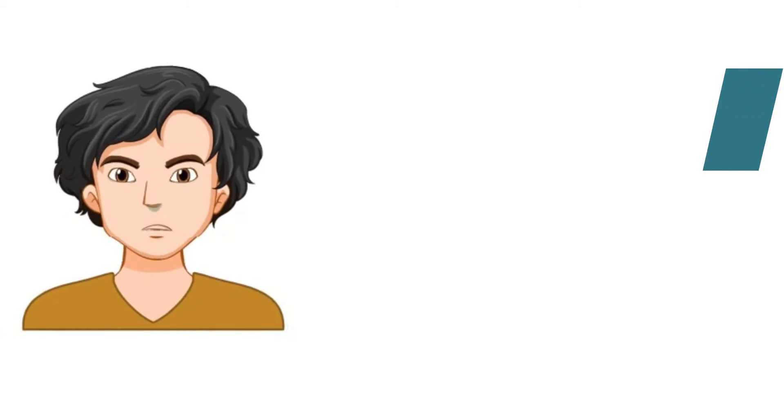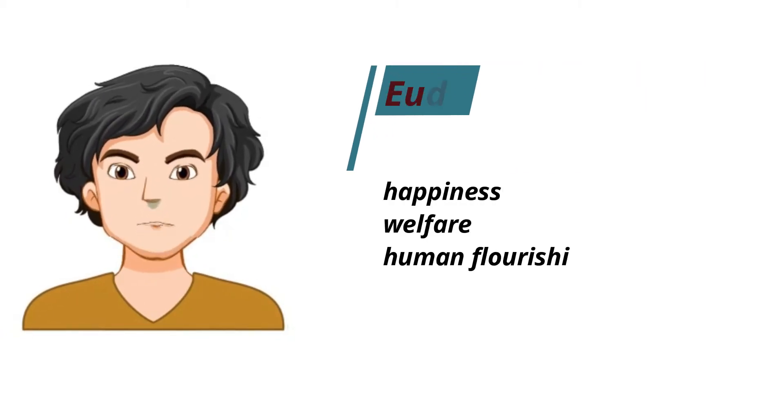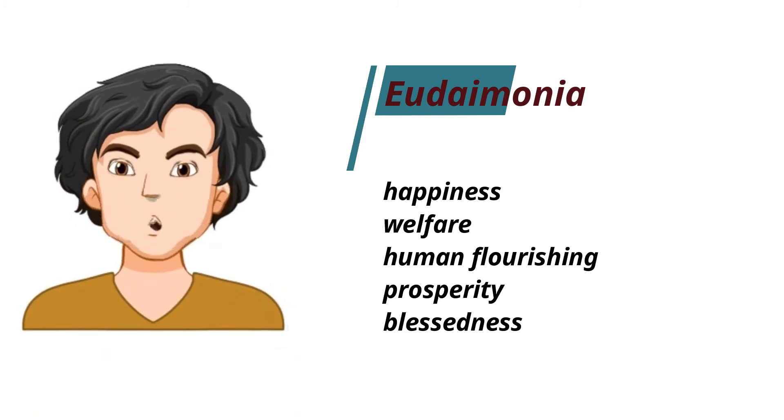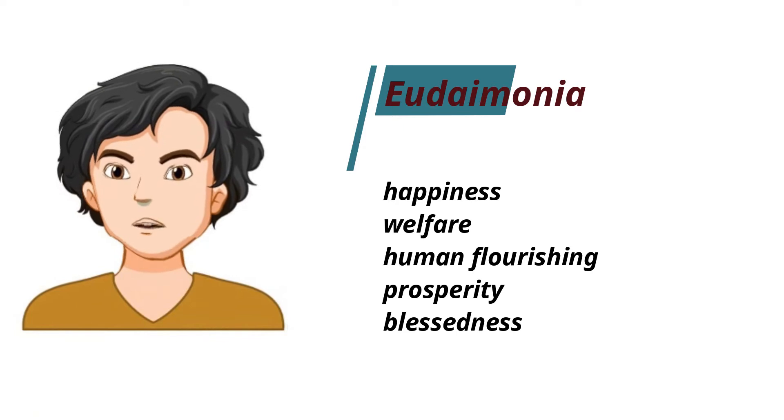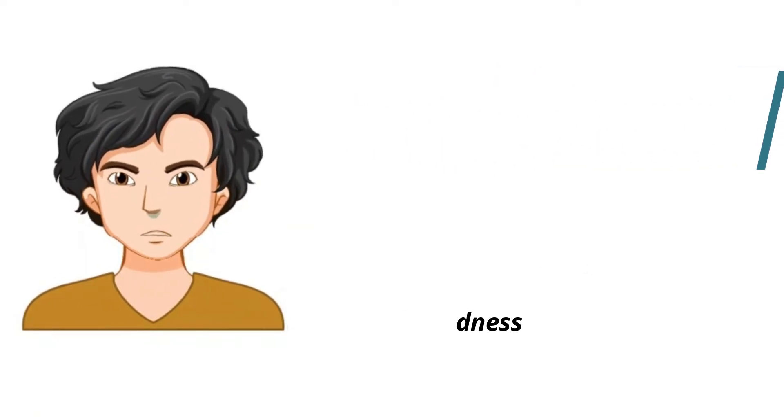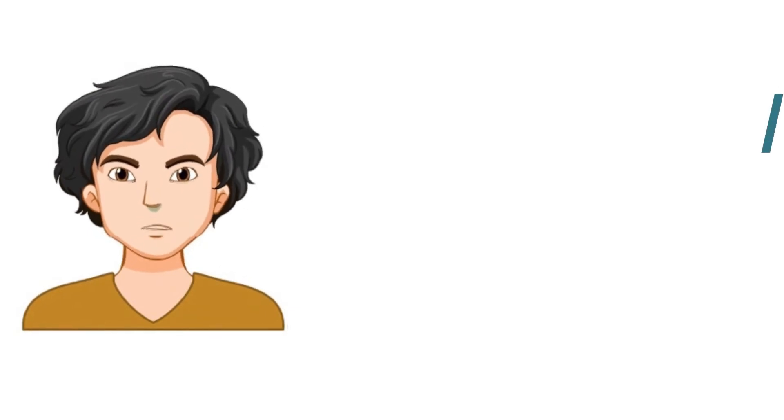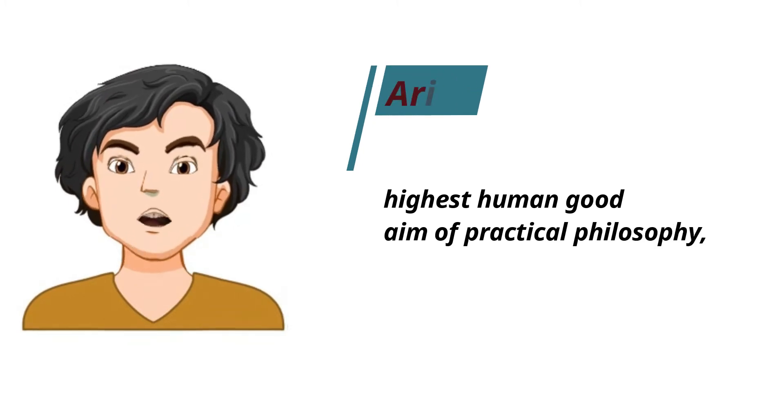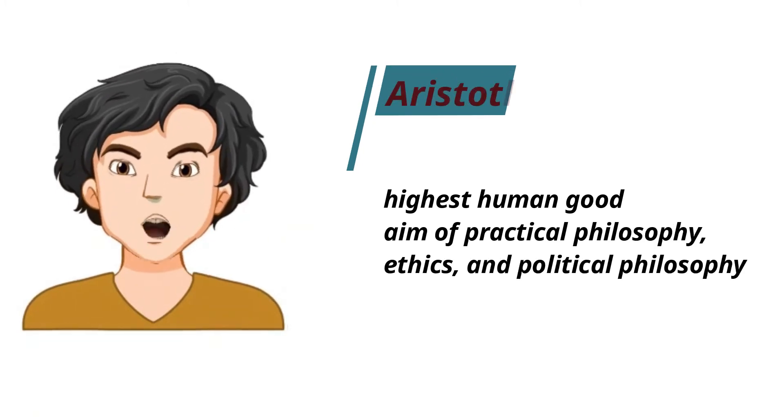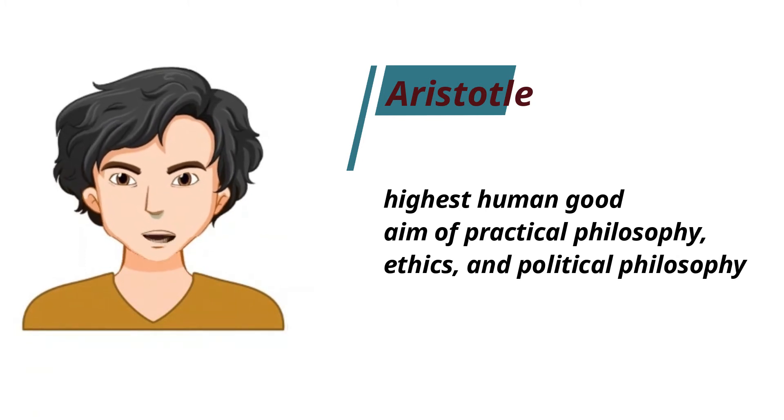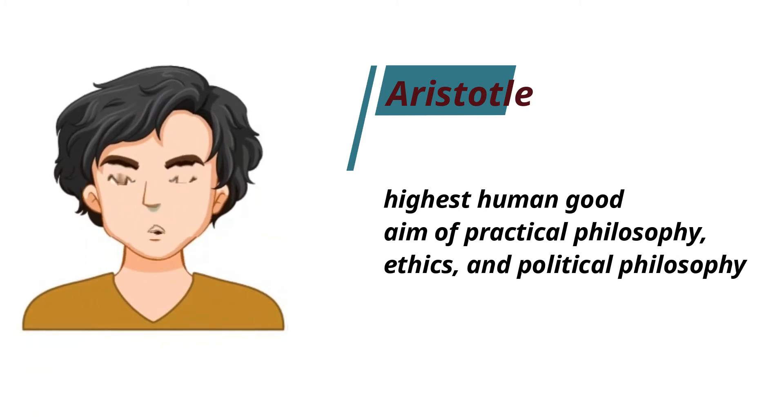Eudaimonia is a Greek word commonly translated as happiness or welfare. However, more accurate translations have been proposed to be human flourishing, prosperity, and blessedness. In the work of Aristotle, eudaimonia was used as the term for the highest human good. And so it is the aim of practical philosophy, including ethics and political philosophy, to consider and also experience what it really is and how it can be achieved.